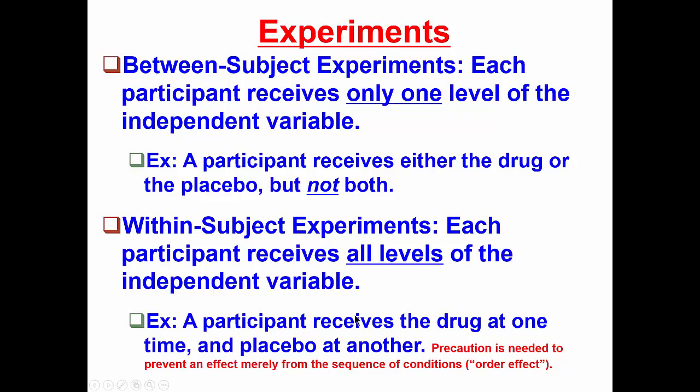we might take our sample and divide it in half. Still, everybody will receive the drug at one time and the placebo at another time, but half of the participants might receive the drug first and the placebo second, and the remaining participants would receive the complementary sequence.